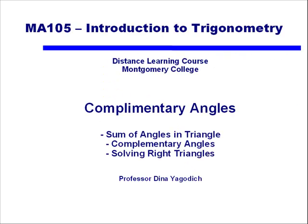Now we've discussed complementary angles. We've talked about how the sum of angles in any triangle is 180 degrees, and the two acute angles in a right triangle are complementary, that is they add up to 90 degrees. And we've also learned how to solve right triangles given one side and one angle.